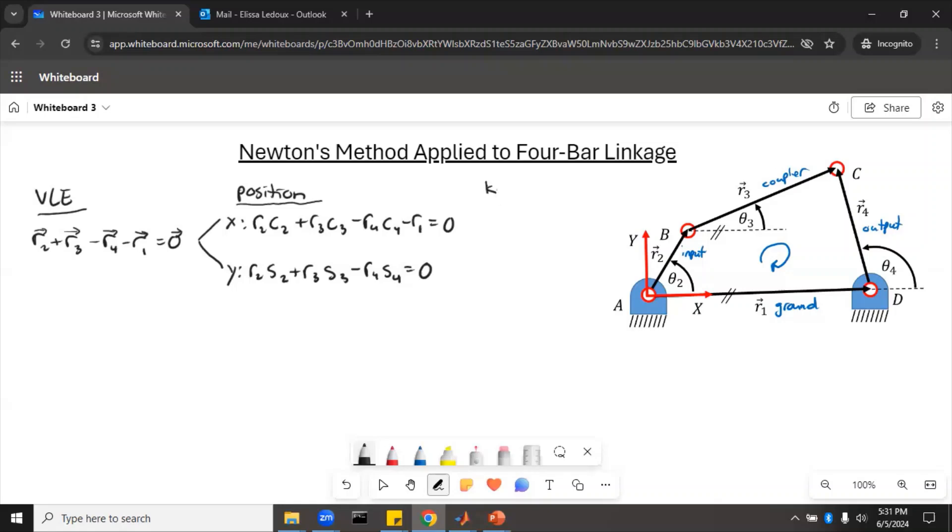So then known are all of the constants, which would be pretty much all of the link lengths, R1, R2, R3, R4, and then finally the ground angle theta 1. And then our input, we had already decided, we get one input because this is one degree of freedom. So standard convention, input is theta 2, let's say that. And so then the unknowns are theta 3 and theta 4.